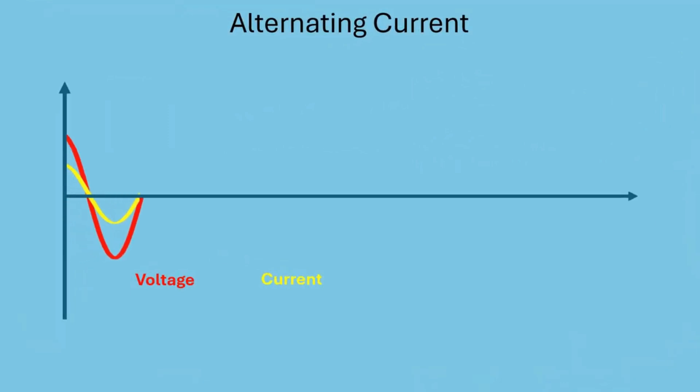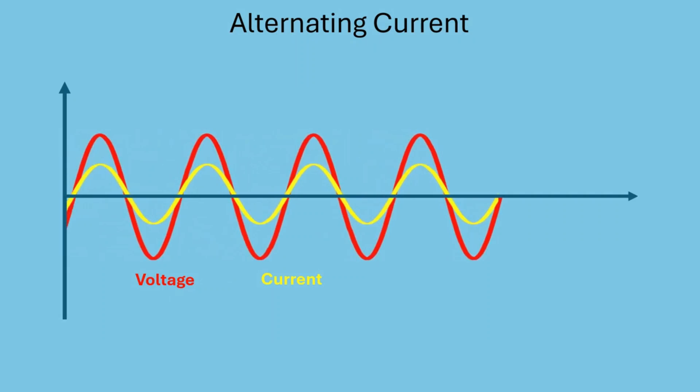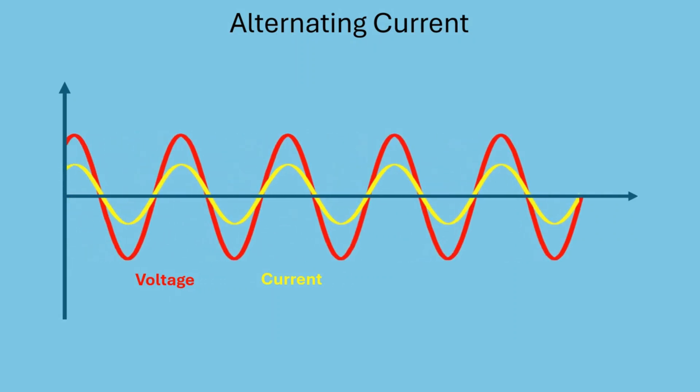Now let's look at alternating current, or AC. In an AC system, voltage and current oscillate back and forth in a sinusoidal pattern. On this graph, the red wave represents voltage, and the yellow wave represents current.